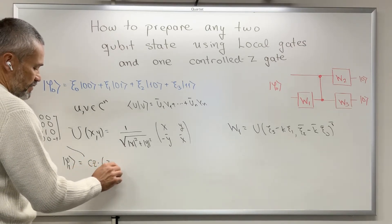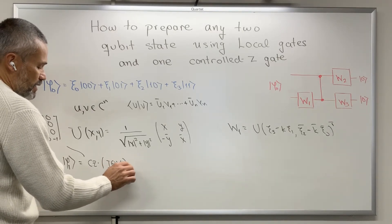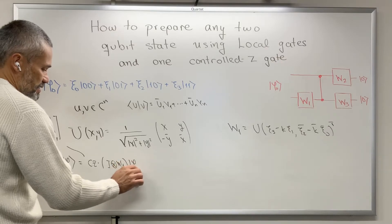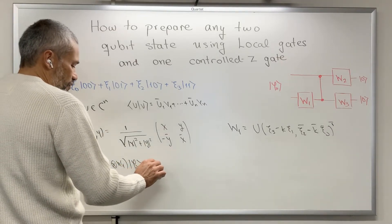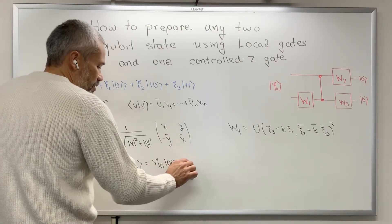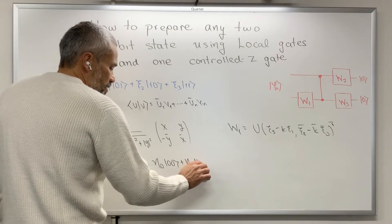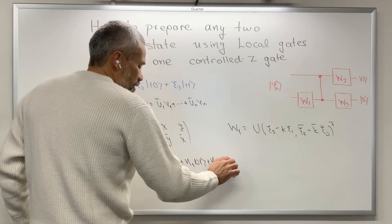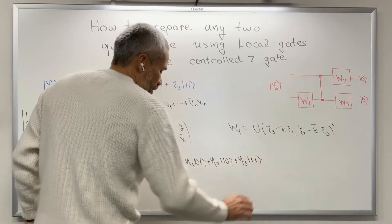...multiplied by the identity matrix tensor product with W1, times the original state. This gives a state of the form η₀|00⟩ + η₁|01⟩ + η₂|10⟩ + η₃|11⟩.